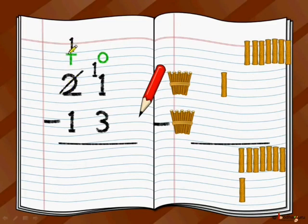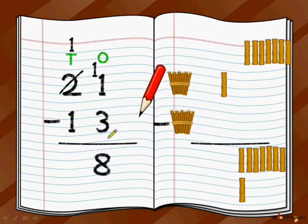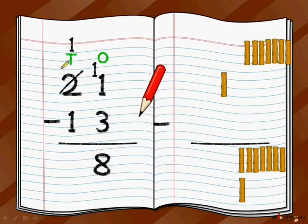So 1 has become 11 in the 1s place, and 2 has become 1 in the 10s place because of regrouping, which is borrowing. So now in the 1s place it is 11 minus 3 which is 8. Now move on to the 10s place: it is a bundle of 10 sticks minus a bundle of 10 sticks, so it is 0. Same way in the numbers, we have 1 minus 1 which is equal to 0.